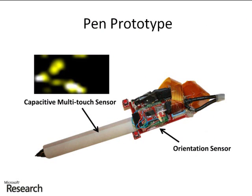We created a research prototype of such a digital pen, which includes a multi-touch sensor that knows where the user is touching the pen with their fingers, and an orientation sensor that knows what angle the pen is held at. And by combining these two pieces of information, we can recognize many different grips on the pen from the user.